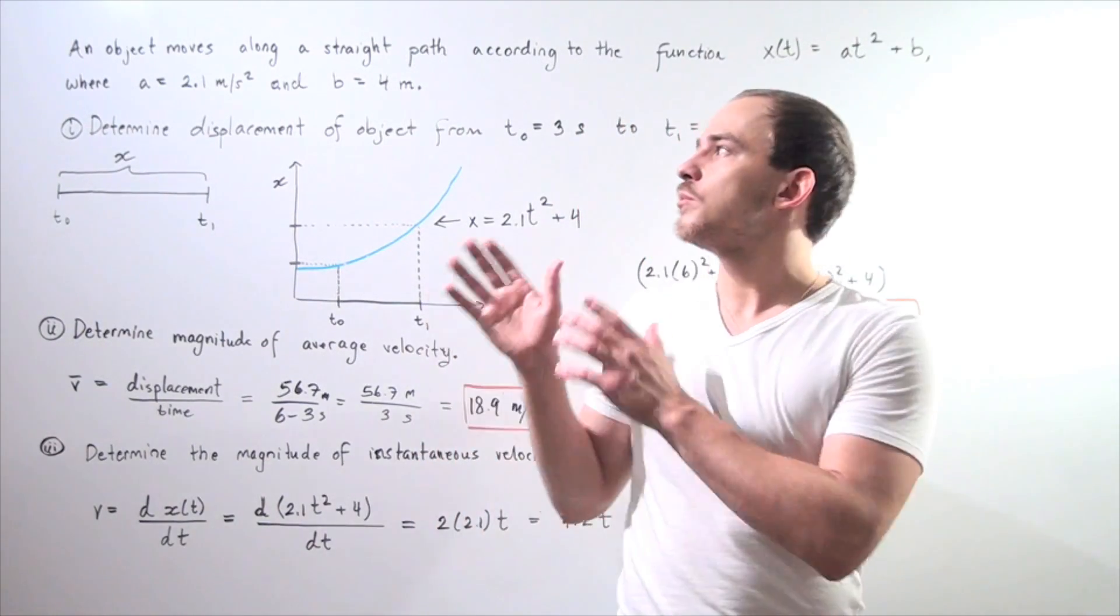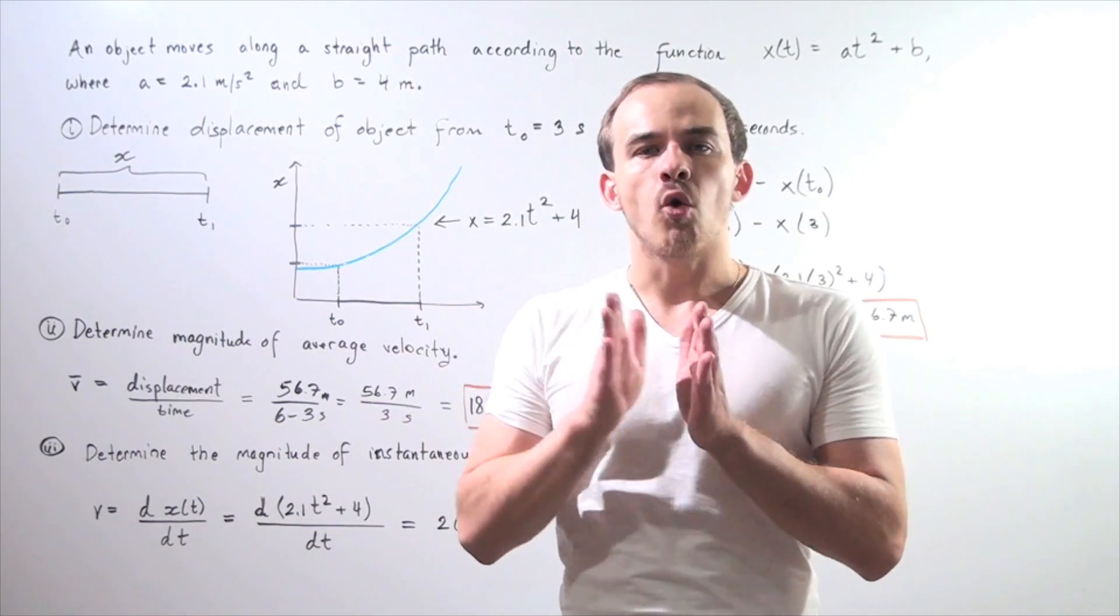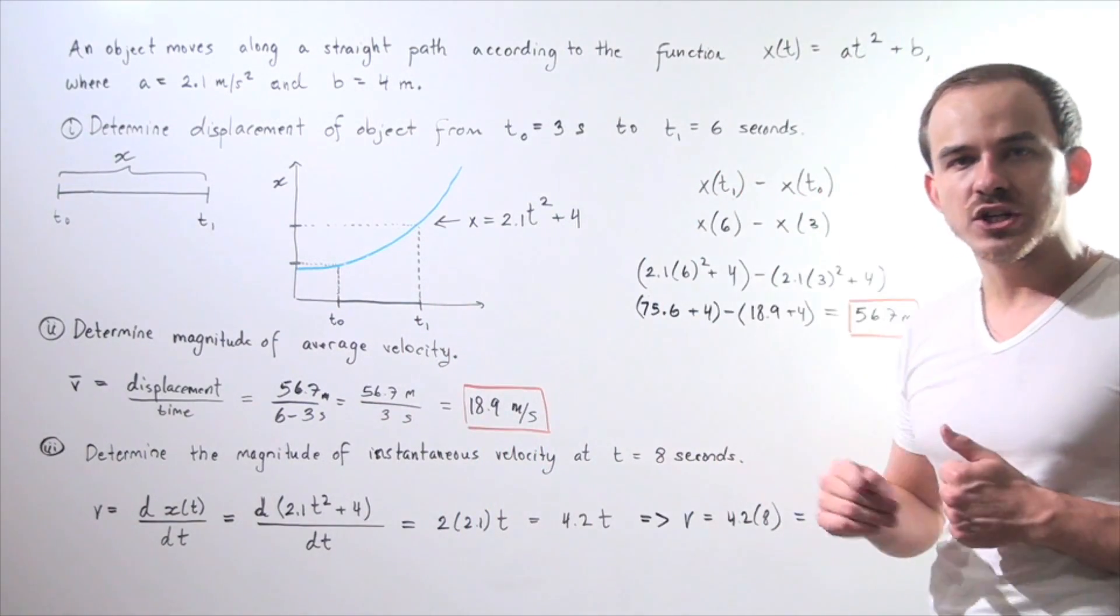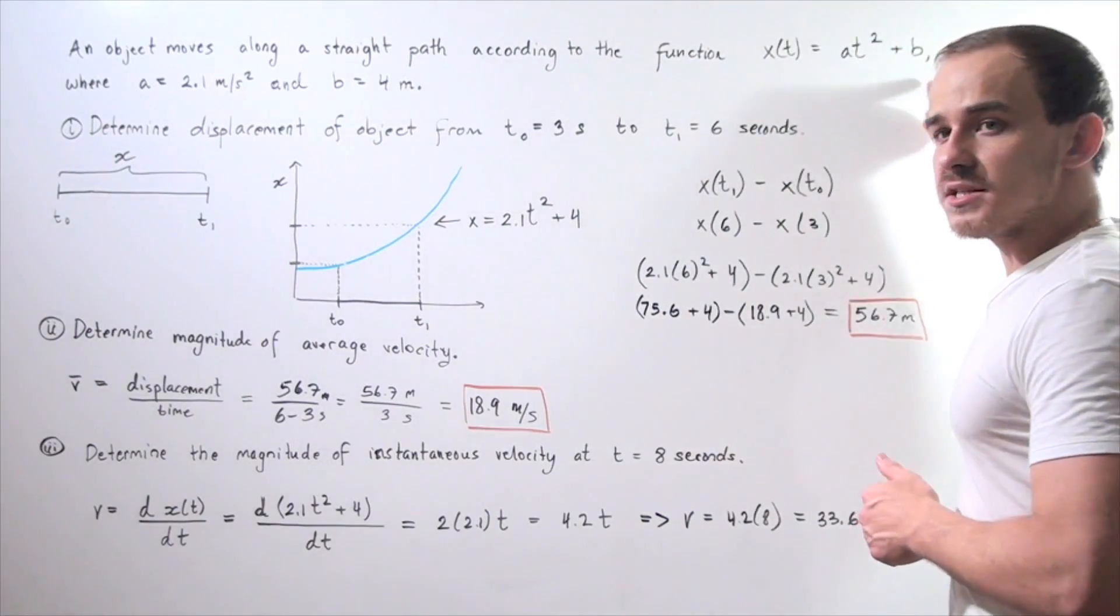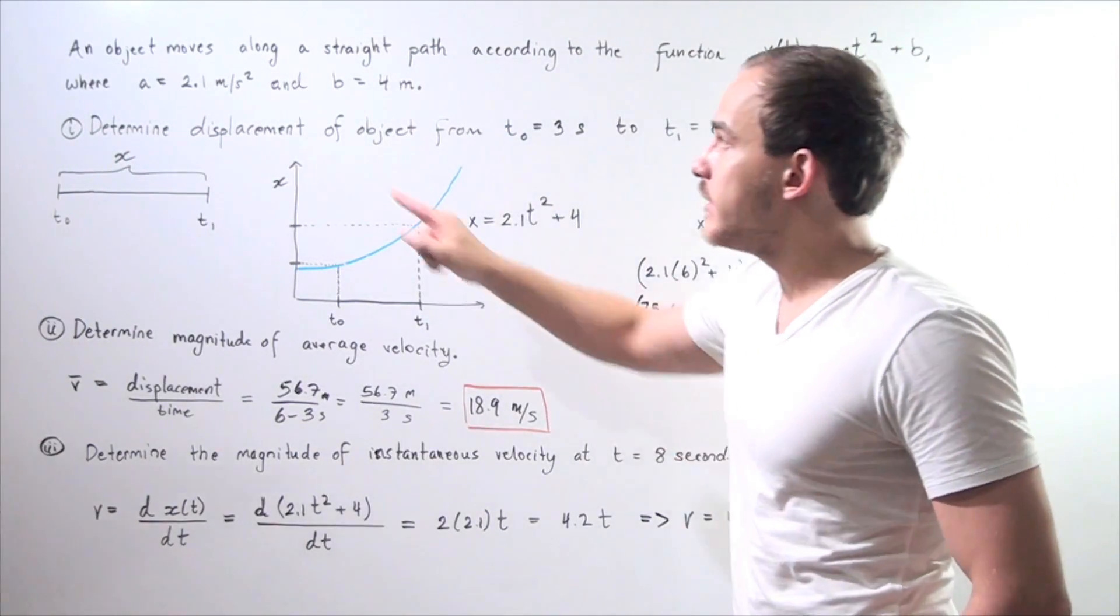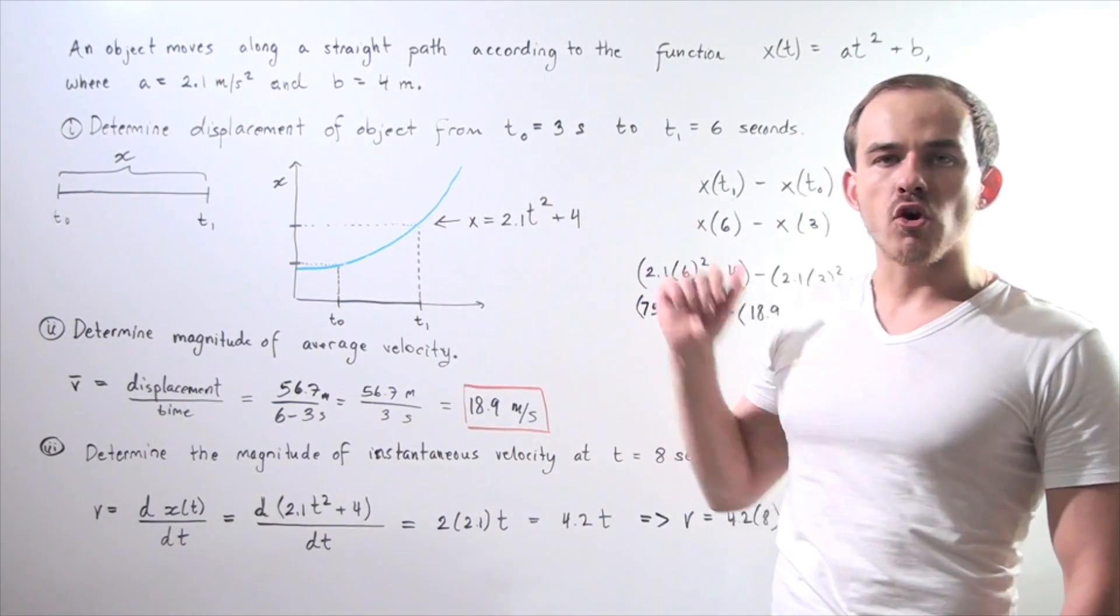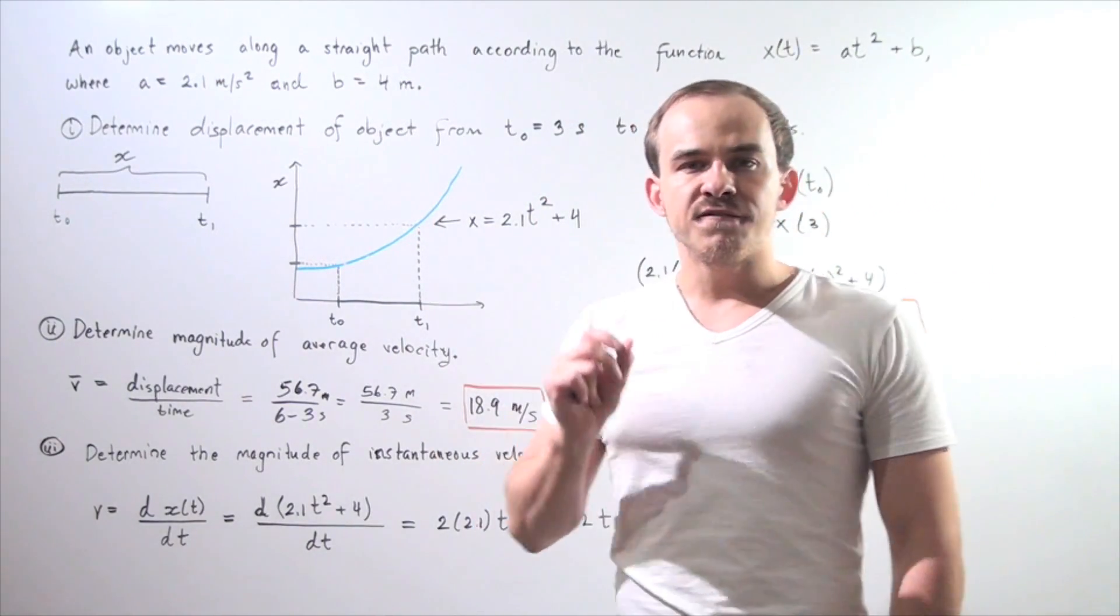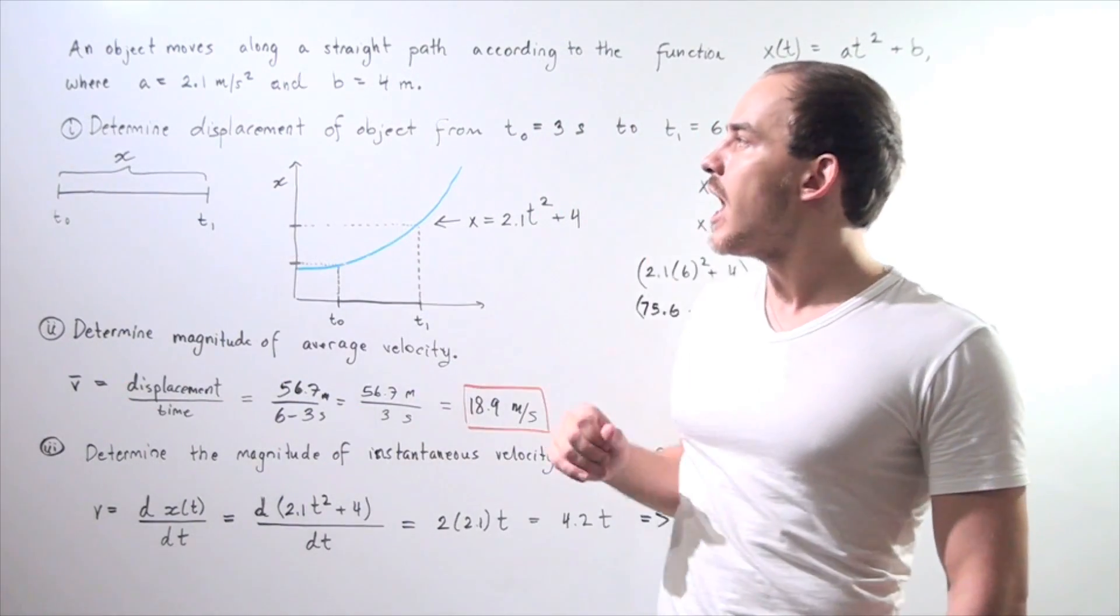Let's begin by looking at our problem. An object is moving along a straight path according to the function x(t) = at² + b, where a = 2.1 m/s² and b = 4 meters. We want to find parts i, 2i, and 3i. Let's begin with part i.